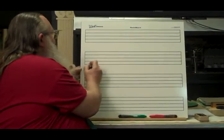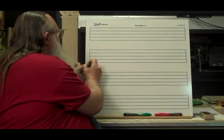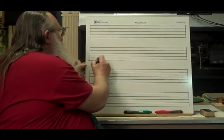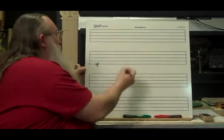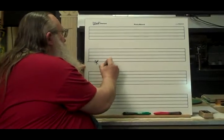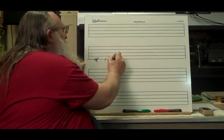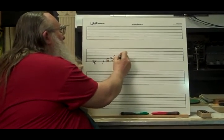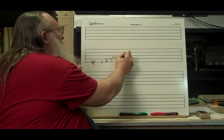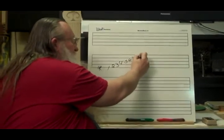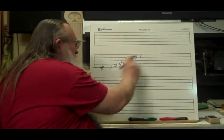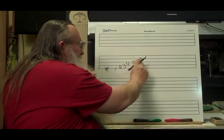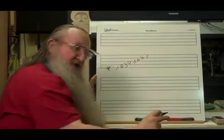Let's say that we decide this bottom line here should be where number one is. So then this would be one, two, three, four, five, six, seven. This is the next one — Do, Re, Mi, Fa, Sol, La, Ti, Do. Not eight.